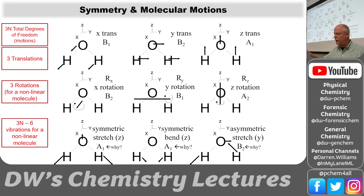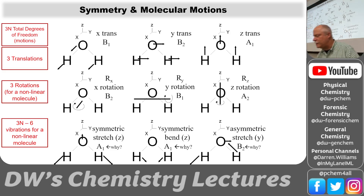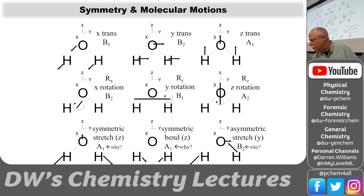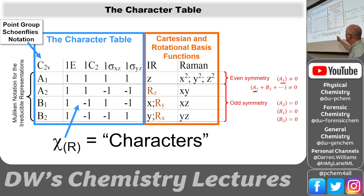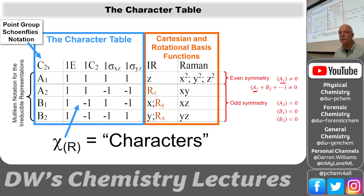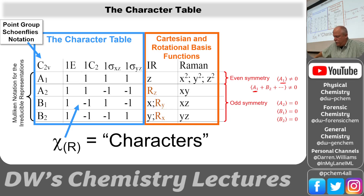The other motion is just bending the angle — the springs don't stretch at all, they just bend. The symmetries for translation are super easy — they're in the character table. Translation in the Y direction has the symmetry of B2; translation in Z is A1; translation in X is B1. For rotation: rotation around the Z axis is RZ, which is A2; rotation around Y is RY, which is B1; rotation around X is RX, which is B2.